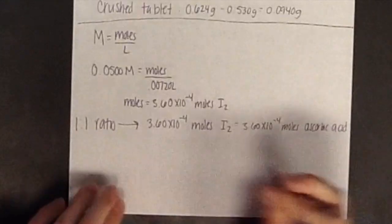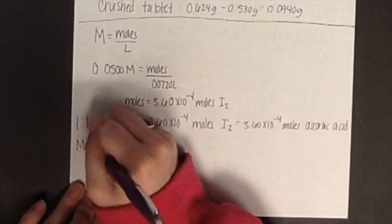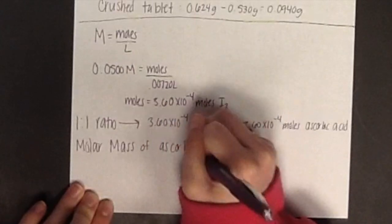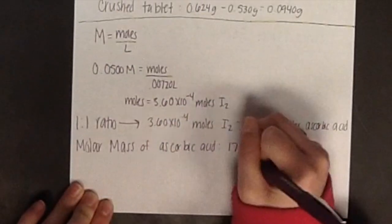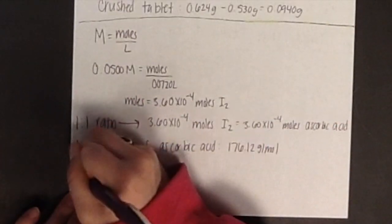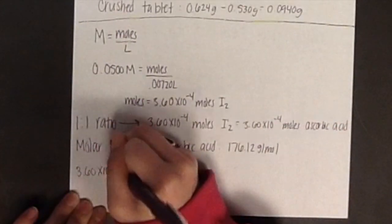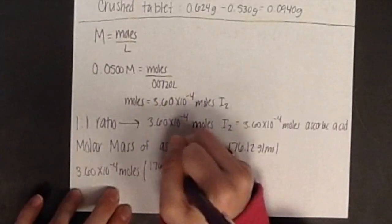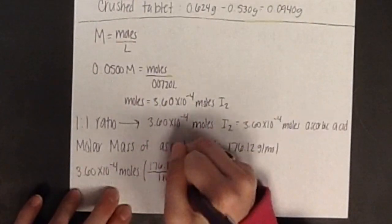To find grams of ascorbic acid, multiply the number of moles by the molar mass of ascorbic acid. The molar mass of ascorbic acid equals 176.12 grams per mole. Multiply this and your final answer will be 0.0634 grams of ascorbic acid.